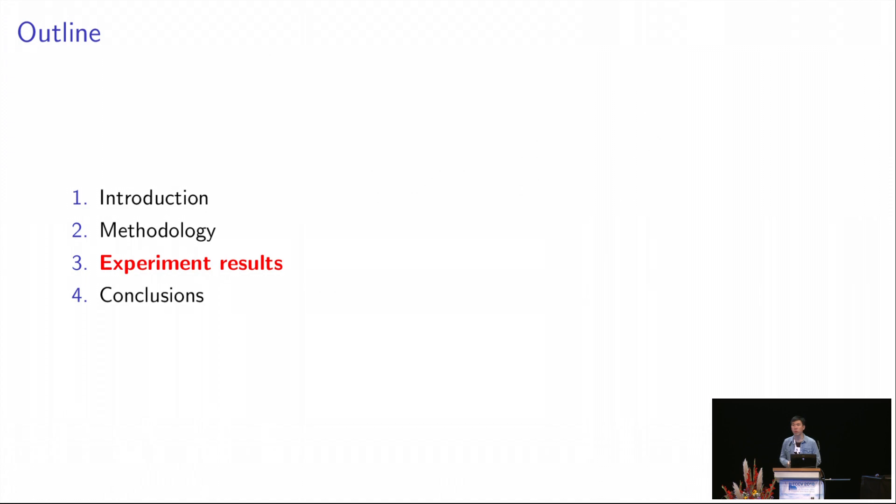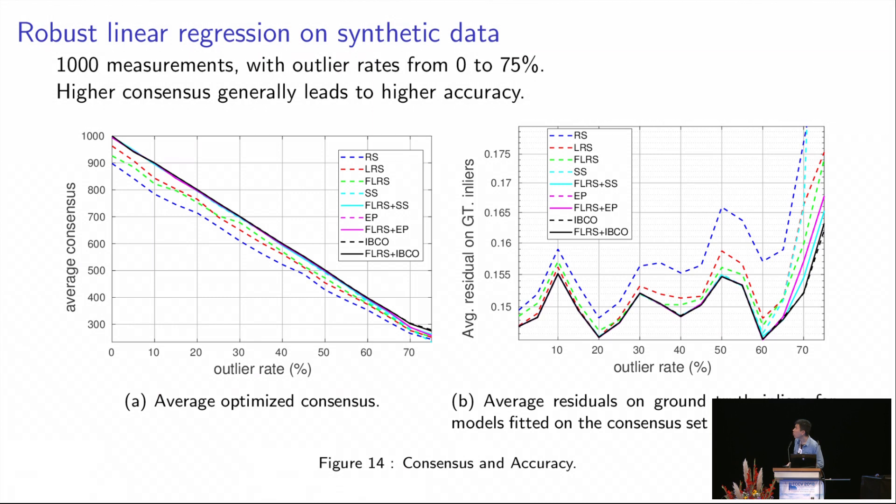First, let's look at the linear regression experiment. In this experiment, we generate 1,000 measurements, with outlier rate varied from 0 to 75 percent. On the left-hand side, we have the consensus size of all the sub-optimal methods. Our method is rendered in black. For most of the data instances, our method finds the largest consensus set. To verify that a larger consensus set actually benefits the model fitting procedure, we further perform least squares model fitting on the returned consensus set, and then we measure the residual from the ground truth inliers to the fitted model.